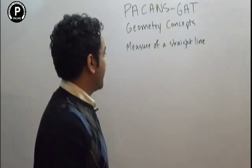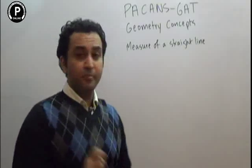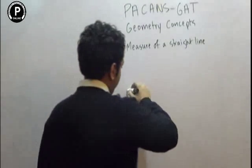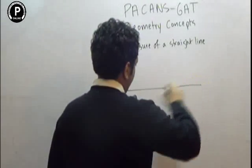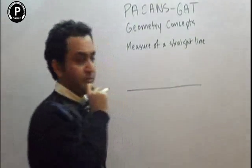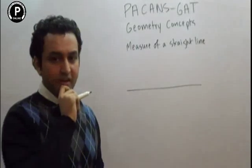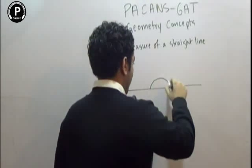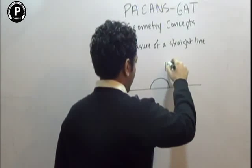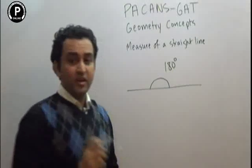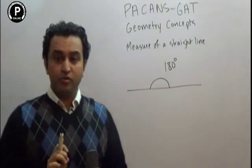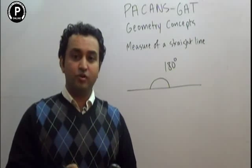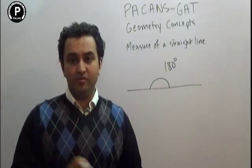Welcome to Peckins Gatt geometry concepts: measure of a straight line. So if you have a straight line, what is going to be the measure of the angle of that straight line? The straight line is always going to make an angle of 180 degrees.